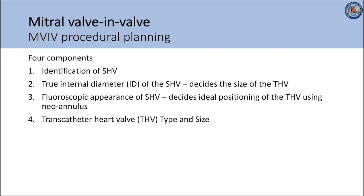Starting with mitral valve-in-valve procedural planning, there are four important components to review. First, surgical heart valve identification; followed by determining the true internal diameter of the surgical heart valve, which can be facilitated through identification of the valve's label size. True ID is critical in selecting the size of the transcatheter heart valve. Understanding details of the surgical heart valve, such as its fluoroscopic appearance, can assist with procedural planning and optimal placement. And finally, selecting the proper transcatheter heart valve type and size to fit the patient's specific parameters and best avoid complications.